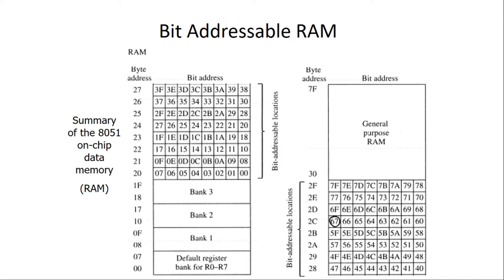The next section is bit addressable RAM. In this section, the memory locations are bit addressable, meaning we can access individual bits instead of the entire byte. This bit addressable section spans from 20 hex to 2F hex. Individual bits also have their own bit addresses — the first location at 20 hex has 8 bits with bit addresses from 00 hex to 07 hex, and so on. In this way, the bit addressable memory has individual bit addresses from 20 hex to 2F hex.